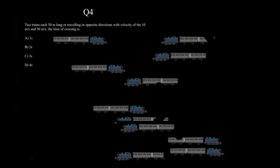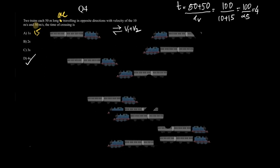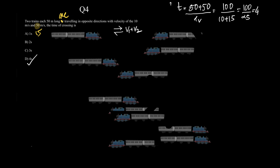Next question: two trains each 50 m long, traveling in opposite directions with velocities 10 and 15 m/s. Time of crossing = total length / relative velocity = (50 + 50) / (10 + 15) = 100/25 = 4 seconds. The correct option is option T. Now let's understand this visually without using relative velocity.